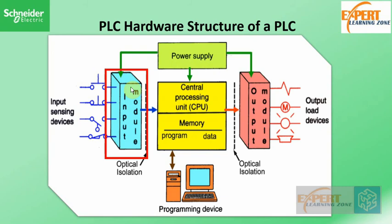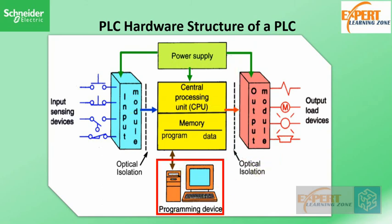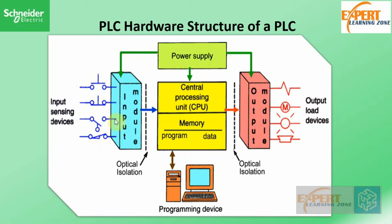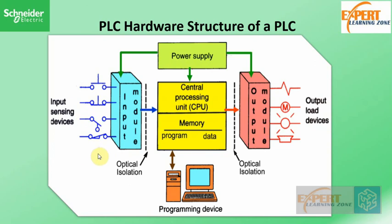Then we have the input module, which is responsible for gathering information sent by sensors and channeling it to the PLC. The output module is the module that the PLC writes to after performing logic on the input. Finally, we have the programming device, which is used to enter the required program into the memory of the processor. It is important to note that the input unit is where we attach our sensors and switches, and the output module is where we attach our actuators like motors and relays.